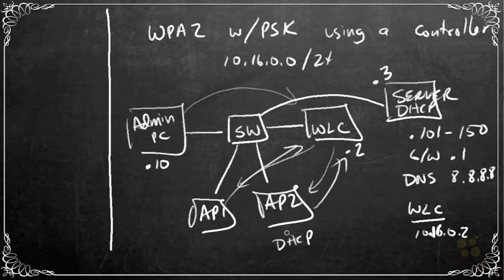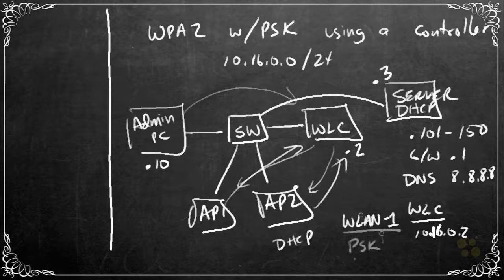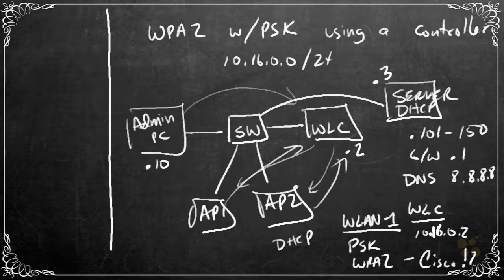And let's also plan on our wireless network name for the SSID. Let's use WLAN-1. And we'll use pre-shared keys with WPA2. And for the password, let's use Cisco!23.